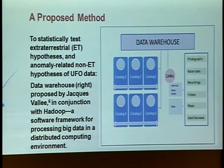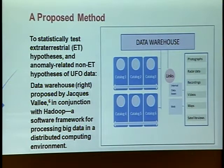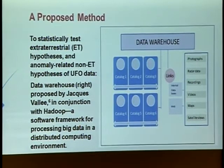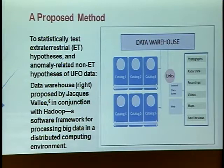A proposed method to address this — especially for those working in data science — is using what's called a data warehouse. That's where you can pull all these various UFO data sources together, even across various different data structures, whether it's photographs, radar data, recordings, or text data — documents you want to put into the data warehouse. Then you can catalog it by physical characteristics of the object or phenomena, and you can also characterize it by parapsychological or psychic characteristics, especially upon the observer.